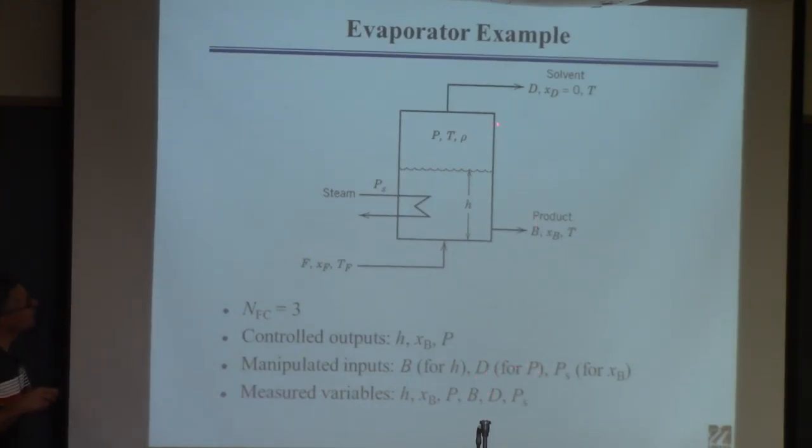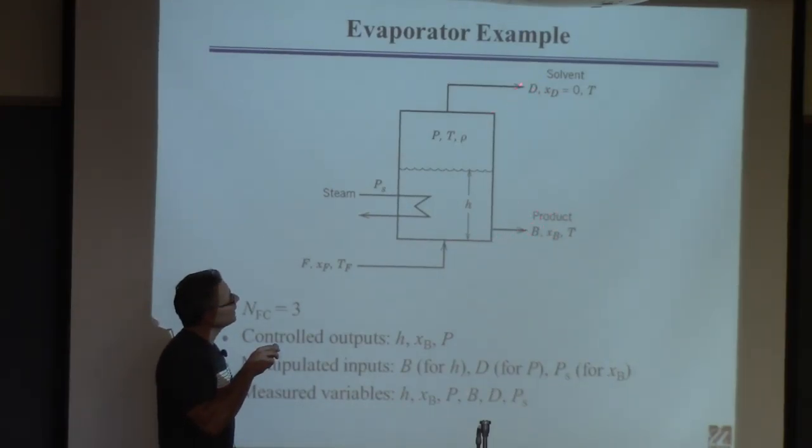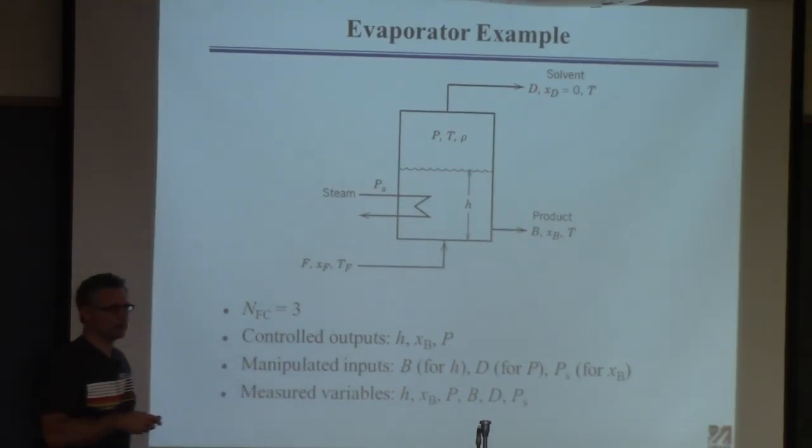How about for pressure? Well, for pressure here, the logical thing to control is the distillate, right? So this directly controls the amount of liquid. This thing here directly controls the amount of vapor and therefore the pressure. So it's a very logical choice. That only leaves one thing left. Use the steam pressure to control the composition.